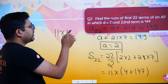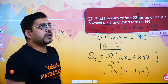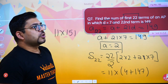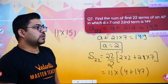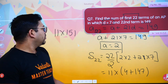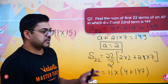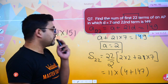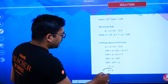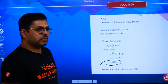So we have 11 × 151. Computing that gives us 1661. So S22 equals 1661.